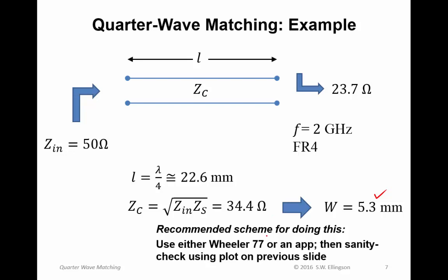The number I get is 5.3 millimeters. Now, the way I got that was using the paper Wheeler 1977, which I've talked about in a previous lecture. You could also get this from an application of some kind. There are numerous software packages, numerous web applications that will tell you what width to use for FR4 at a given frequency to achieve a certain characteristic impedance.